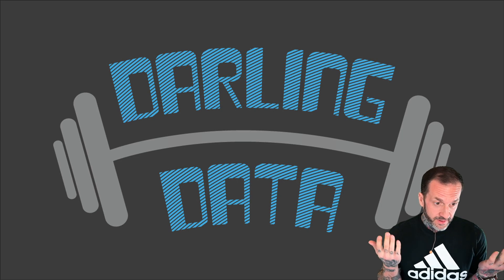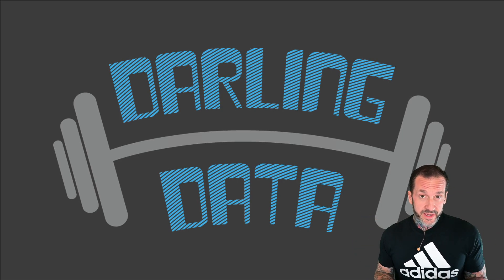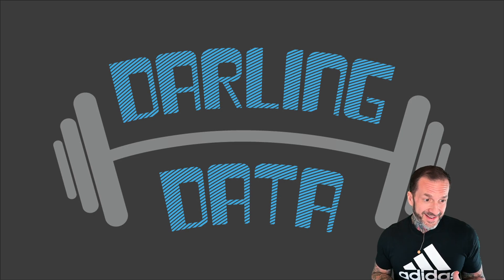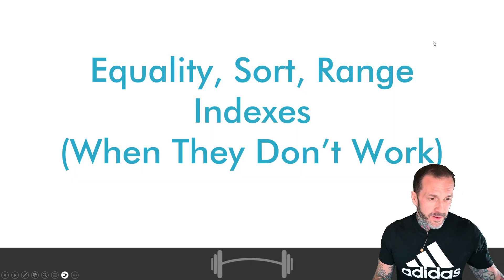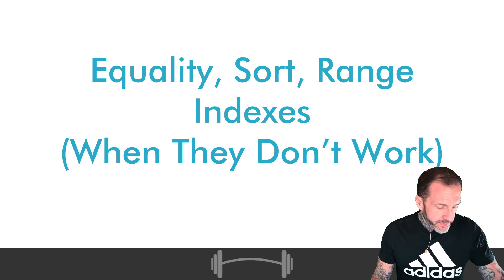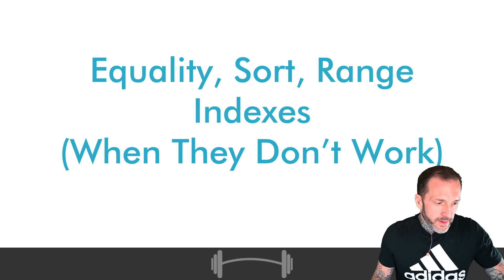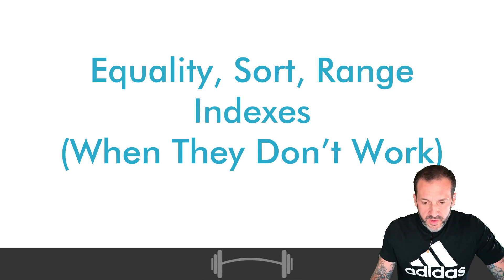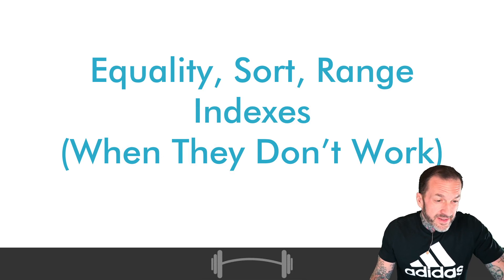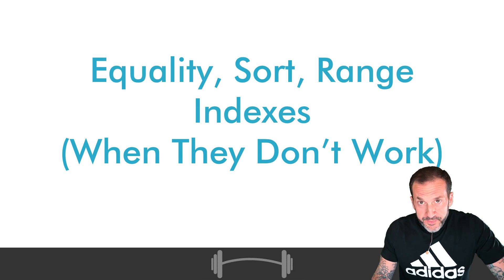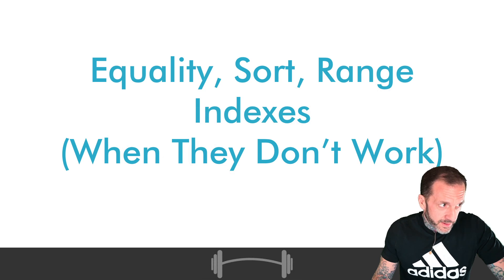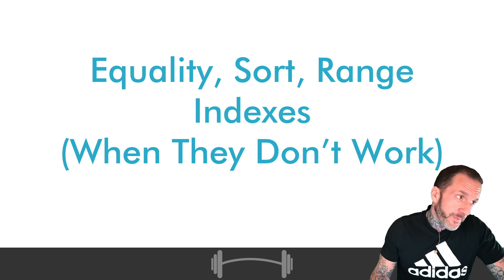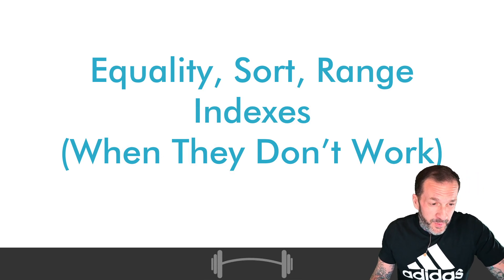In yesterday's video I did say that there are situations where it's not gonna be as great of an idea as it is in others, and we're gonna — I owe you at least something for that. So to generalize a little bit, the problem with this style of indexing comes when your range predicate is far more selective than your equality predicate and your ordering elements are in a bad order for the way you want to search for things.